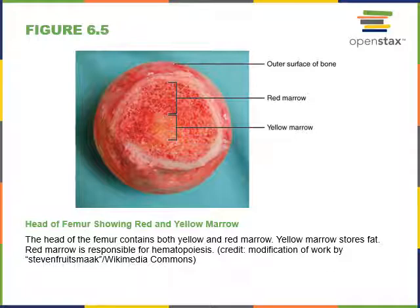Blood cell production is another major function of the skeletal system, also known as hemopoiesis or hematopoiesis. This occurs in red bone marrow, where stem cells called hematopoietic stem cells divide and differentiate into all types of blood cells: erythrocytes, leukocytes, and thrombocytes. Red bone marrow is found deep within our bones, inside medullary cavities deep inside long bones.